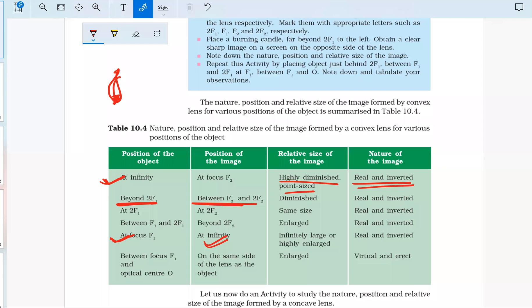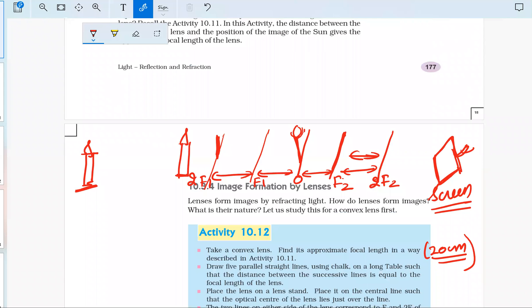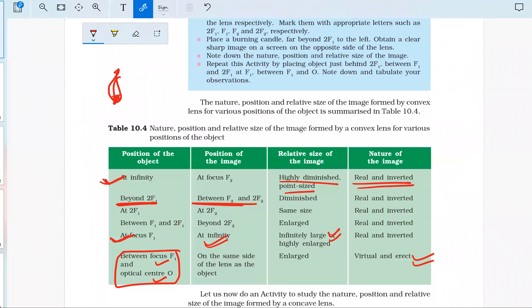When the object is between F1 and O, this is actually a different case. When the object is between F1 and O, you will not be able to obtain the image on the screen. That means the image is virtual. The image will be obtained and can be seen inside the lens only, so it's actually a virtual and erect image. Therefore, it cannot be obtained on the screen.